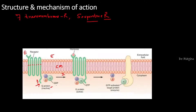Now, what is this G-protein? G-protein is a trimeric protein which is having three subunits. Here we can see there is an alpha subunit, there is a beta subunit, and then there is a gamma subunit. And the alpha subunit is attached to the GDP.